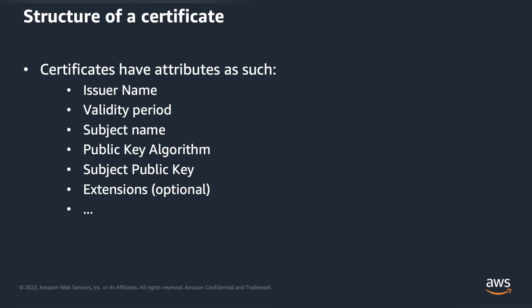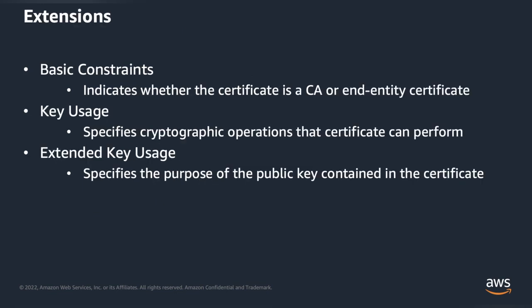Let's talk about extensions in more detail. There are a few kinds of extensions I want to talk about, starting with the basic constraints. The basic constraints indicate whether the certificate is a CA certificate or an entity certificate. The key usage specifies cryptographic operations that the certificate can perform — as an example, you may want to specify that signatures are allowed but encipherment is not. Then we have the extended key usage, which specifies the purpose of the public key contained within the certificate. As an example, you may say that the certificate is a server end of a TLS connection, or it may indicate that the key may be used to secure email.